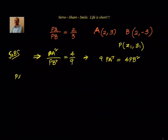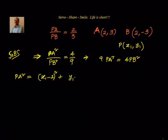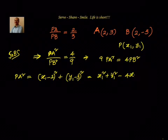First we will find out PA squared. PA squared is the distance between (x1, y1) and (2, 3). What is the formula we use? x2 minus x1 whole square plus y2 minus y1 whole square. So it is (x1 - 2)² + (y1 - 3)². Simplifying and expanding, we will have x1² + y1² — the degree-two terms — then minus 4x1 minus 6y1, and the constant 2² + 3² = 4 + 9 = 13.